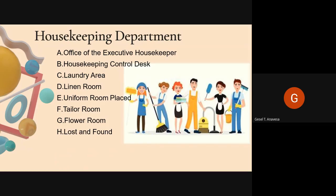Lost and Found is the area where all articles left by guests are stored for a specific period. If a guest leaves something in their room, the front desk notifies housekeeping to verify the item. The guest must provide validation and sign as proof of receipt. The Floor Pantry is located on each guest floor to stock linen, cleaning supplies, and guest supply requirements, and should be securely locked near the service elevators.